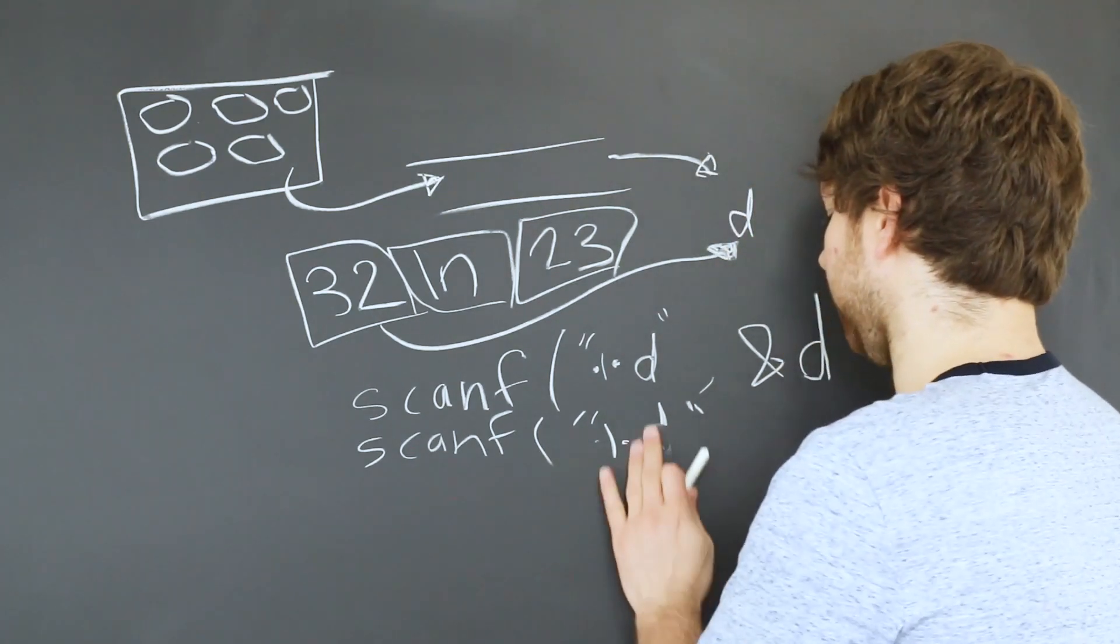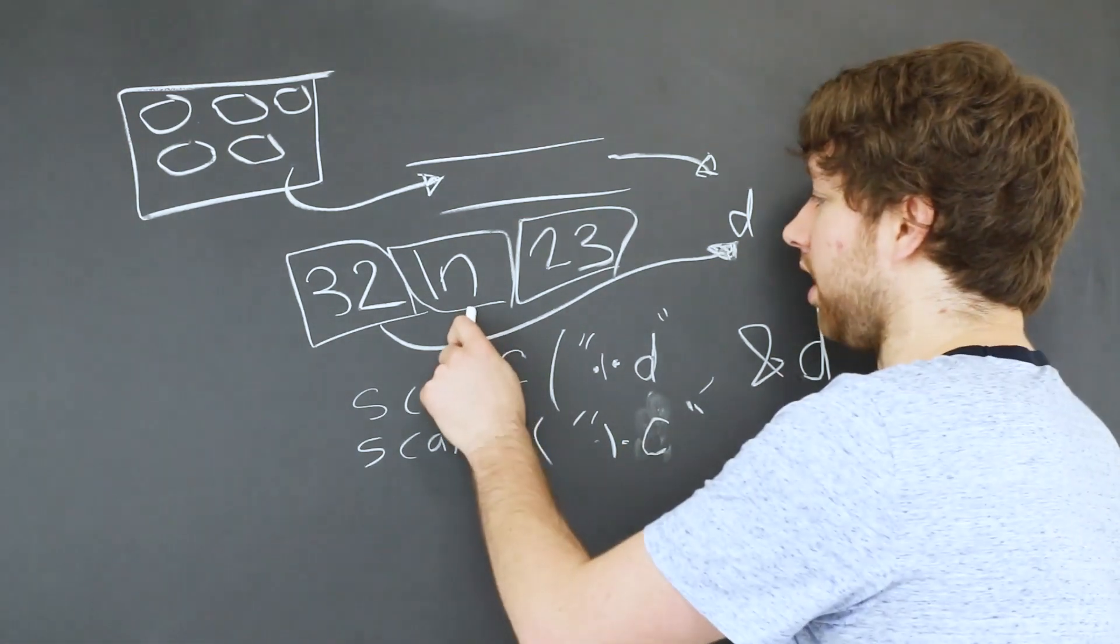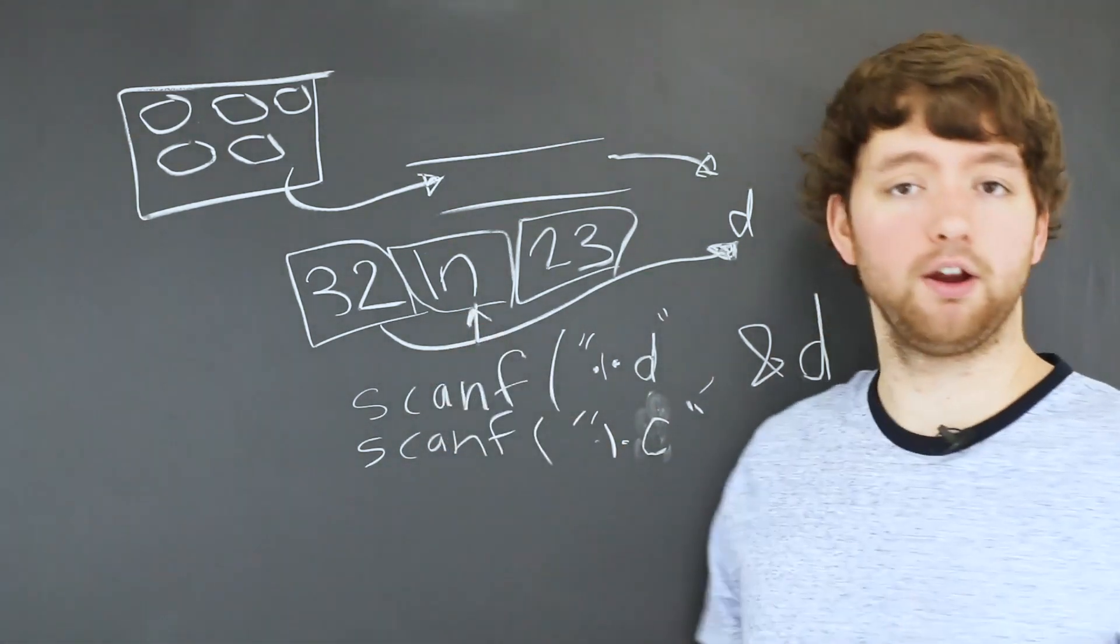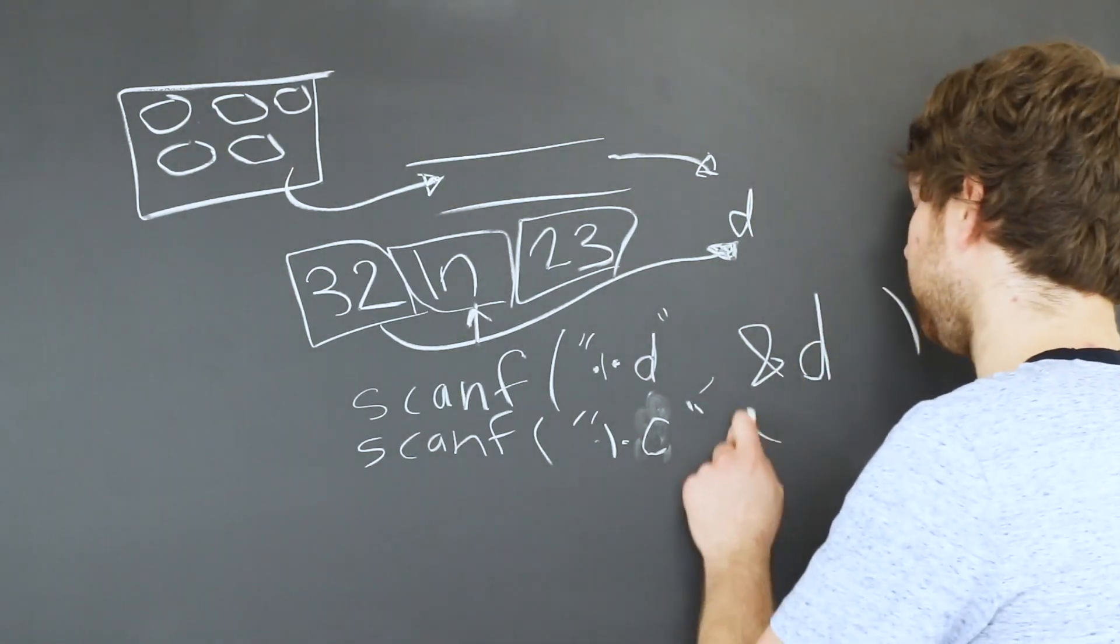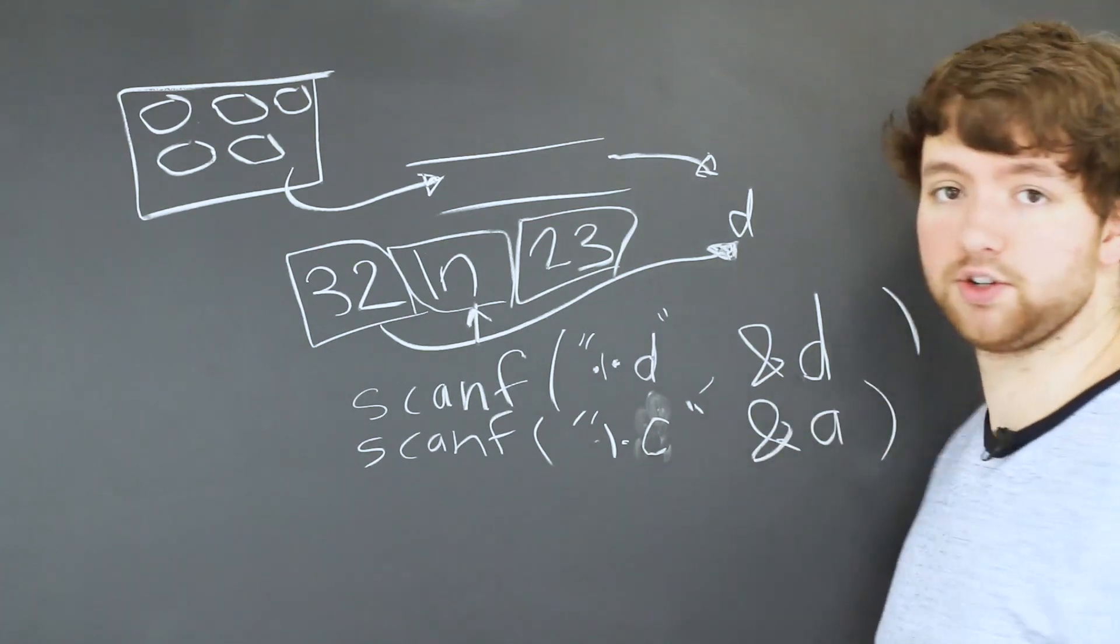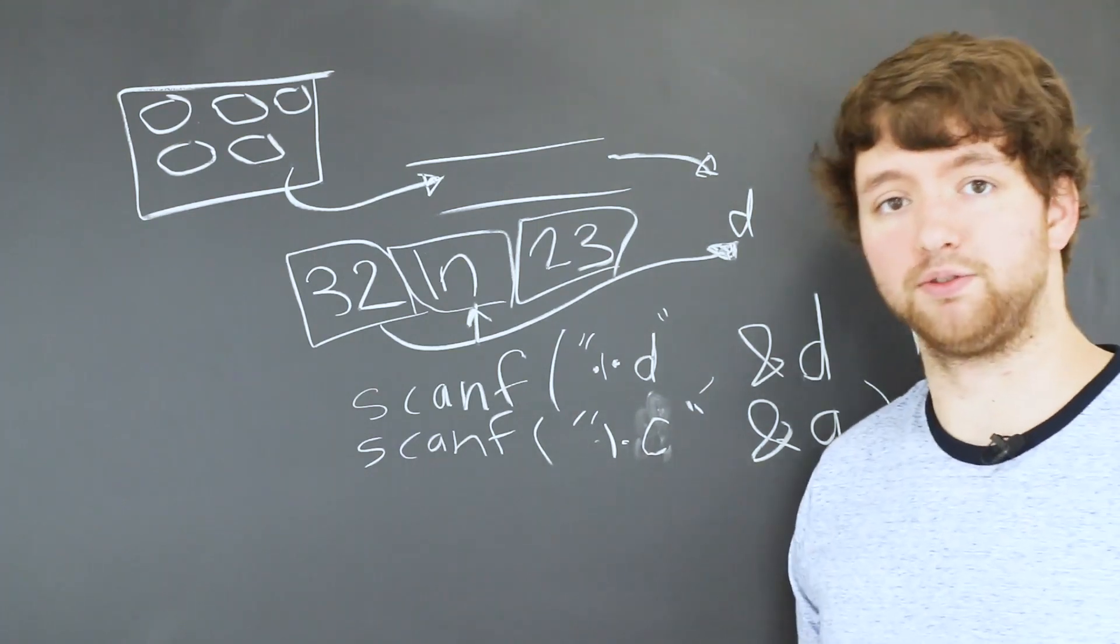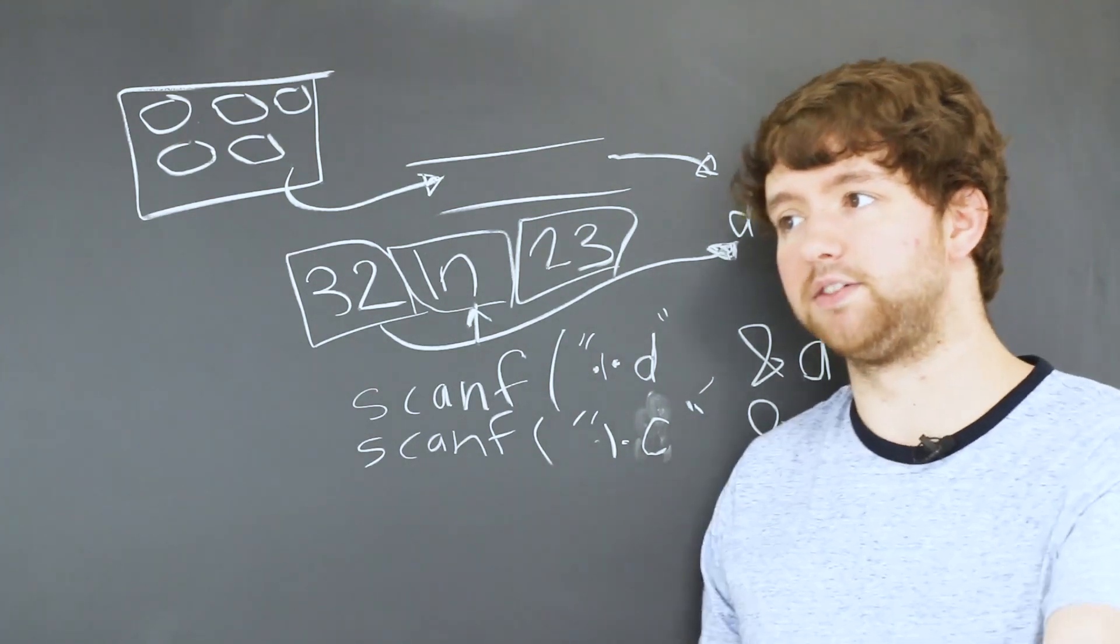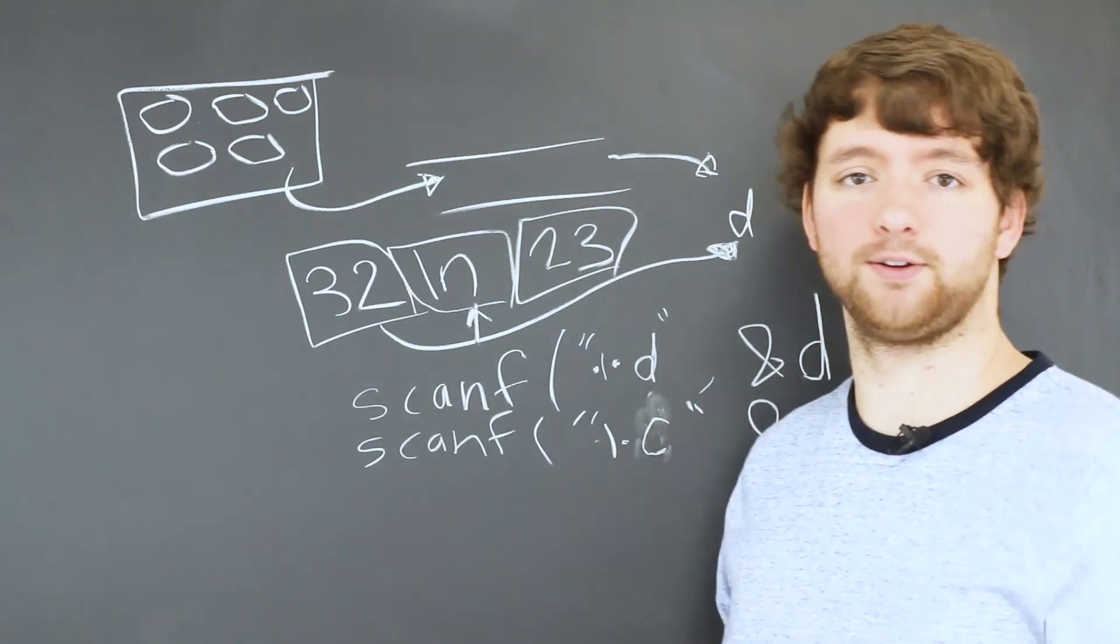Well, now this newline is a perfectly good character, right? So it's going to grab that character and assign that to whatever variable we were using in this function. So in that situation, it's not going to ask the user for more input. And half the time it works. When you're getting numbers, it works. And then when you're getting characters, it doesn't work.